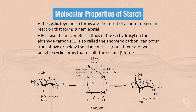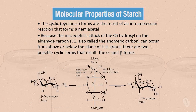The nucleophilic attack of the C5 hydroxyl on the aldehyde carbon, or C1 — also called the anomeric carbon — can occur from above or below the plane of this group, so there are two possible cyclic forms: the alpha and beta forms. The beta form has the hydroxyl group in the equatorial position, and the alpha form has the hydroxyl group in the axial position. A mnemonic to help you remember is "batter up for beta."